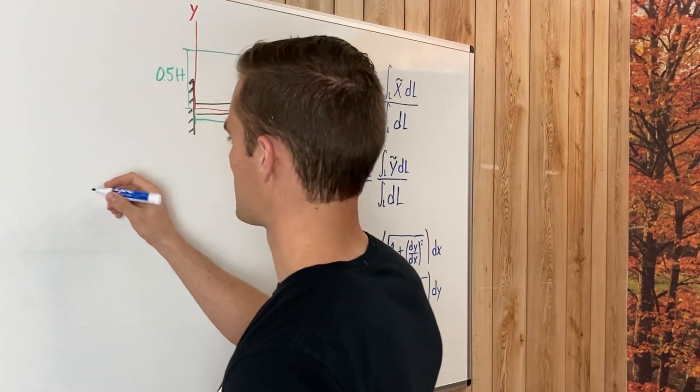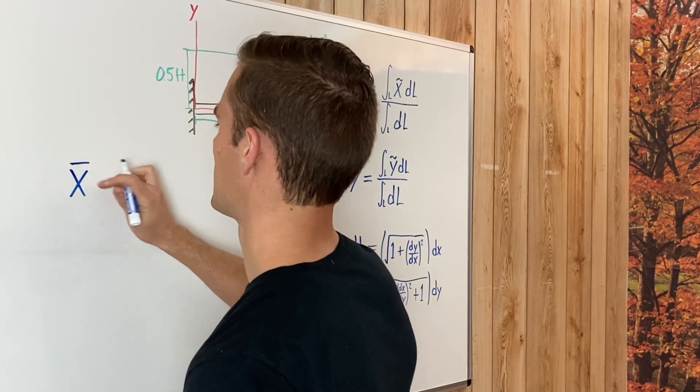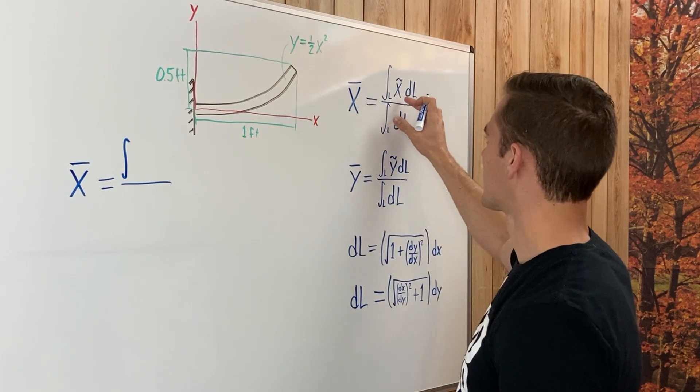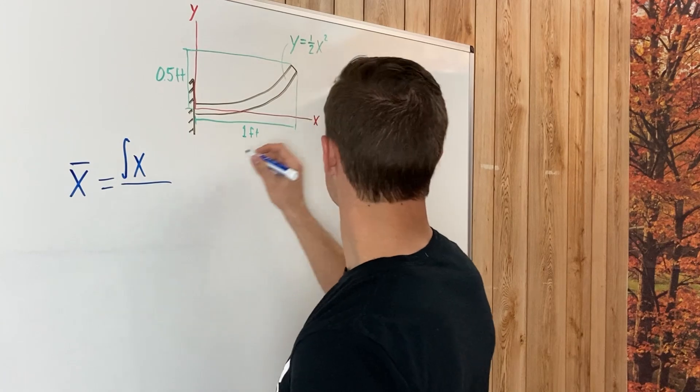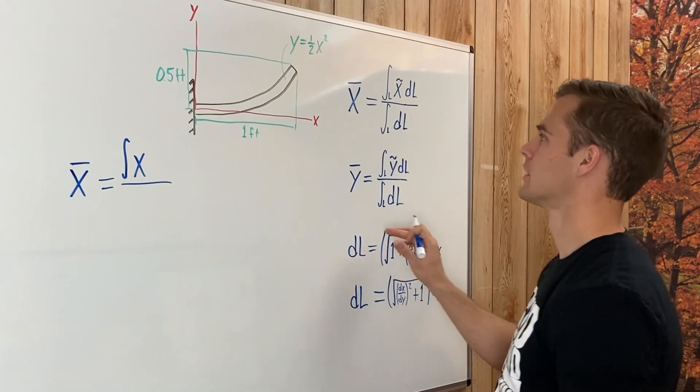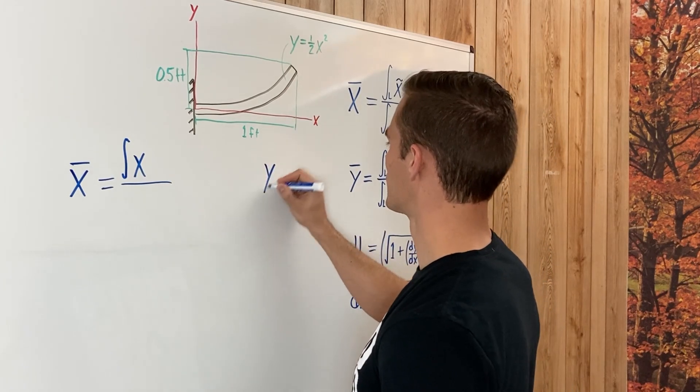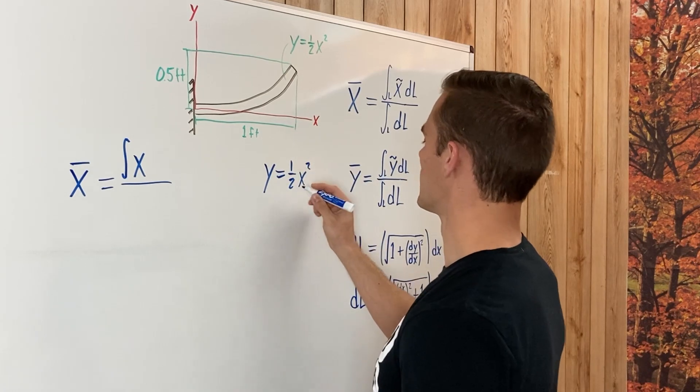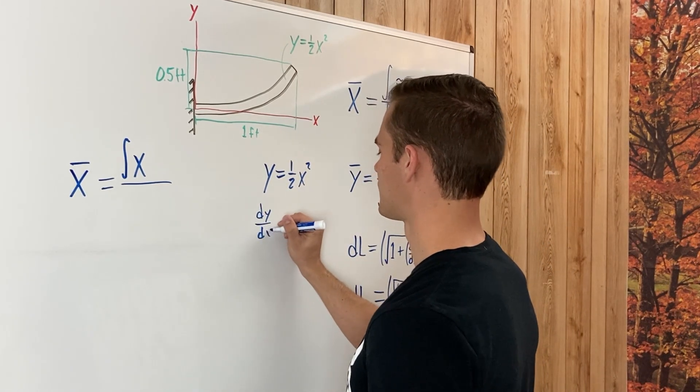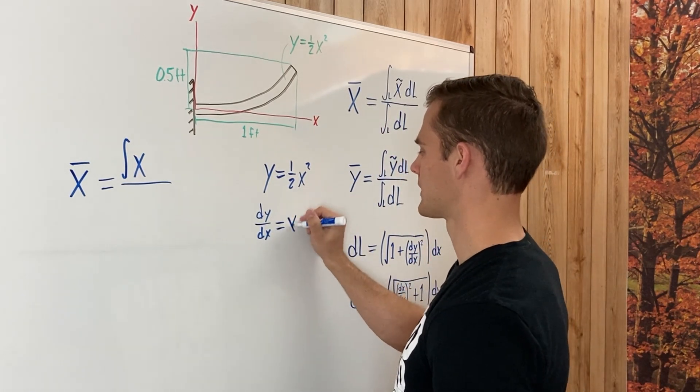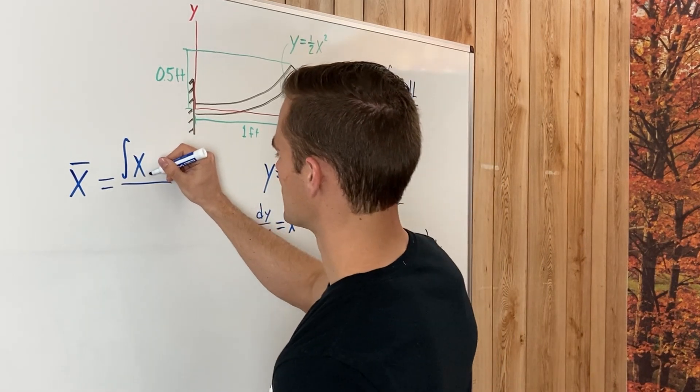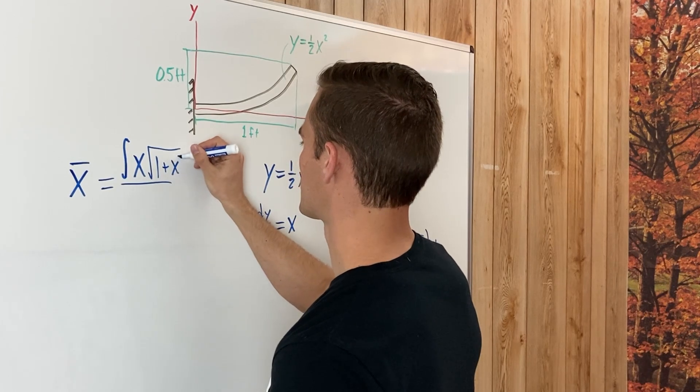And so first we're just going to start off by finding the center of gravity in the x direction. So that'll equal the integral of x, because that just gets replaced with x, and then dl. So here we have 1 plus the square root of dy dx. Well, to get dy dx, we have our equation y equals one-half x squared. Well, if we take the derivative with respect to x, this y becomes dy dx. And this side, when you take the derivative, it just becomes x. So this dy dx in here can be replaced with x.